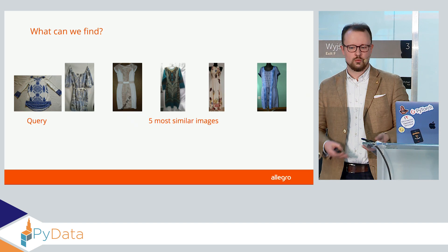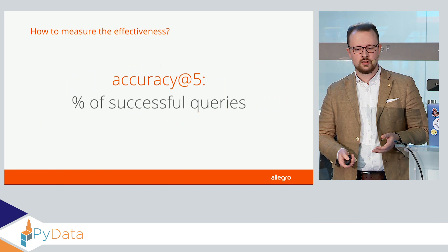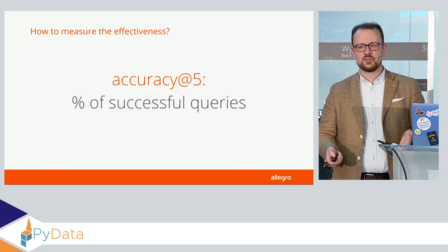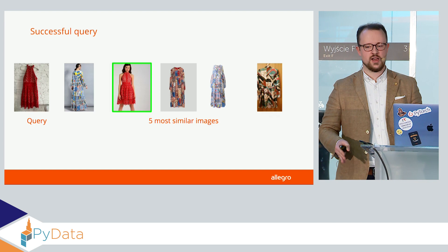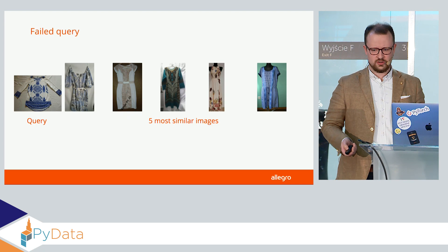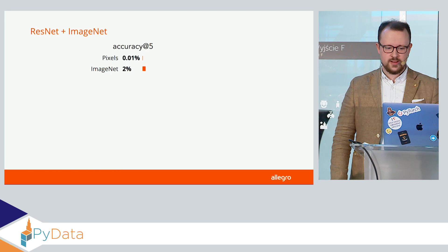We no longer get the ugly floor, but the results are not really much better. It's hard to say if anything has changed. So let's settle on some metric for how we can measure the effectiveness of such search. We'll be using accuracy at 5 — a percentage of successful queries, where by successful query I mean one where within the five most similar images we find the item we've been looking for, and a failed one when we don't. The pixels didn't work well. ImageNet was 200 times better, and we get 2% accuracy, which is not great.